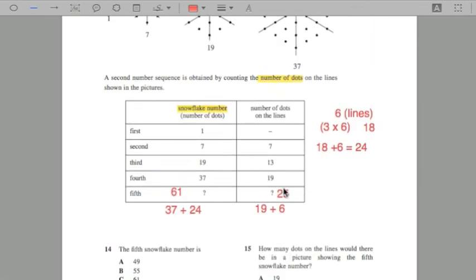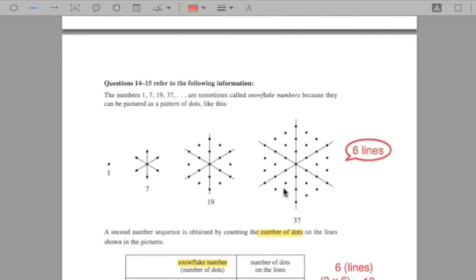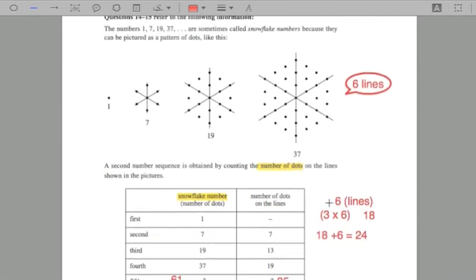So to recap, this is what we do. We think, we look at the question and we approach it in the most easiest way possible. We know there are visuals, so let's use them. We need to know that there are two different concepts. The number of dots on the lines, and then the snowflake number.